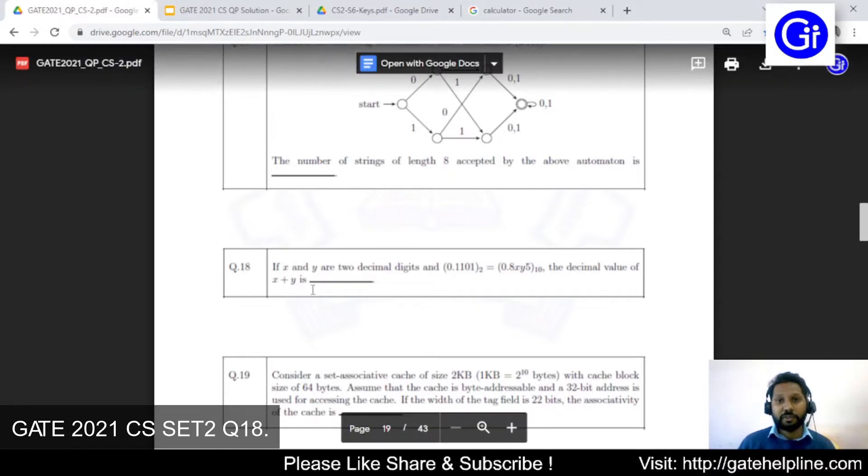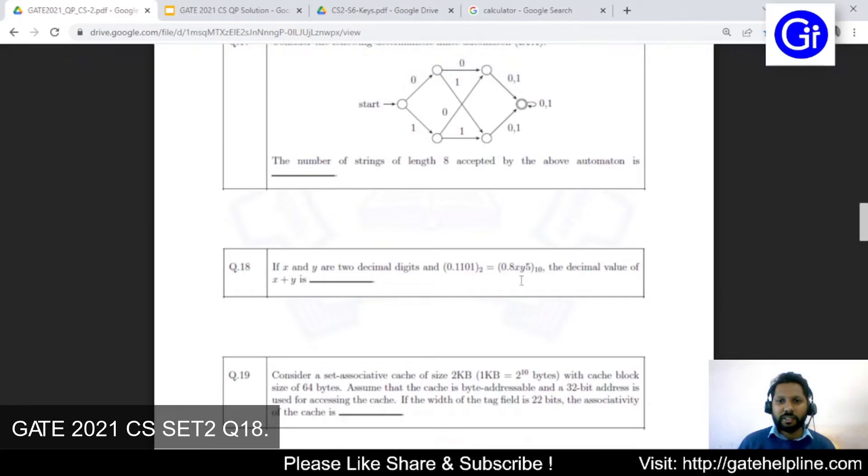0.8xy5 base 10, that is binary to decimal conversion, the decimal value of x plus y is dash. In this decimal conversion we have these two values which are not shown to us, that is x and y. We need to find out the decimal conversion and just sum up these two place values.